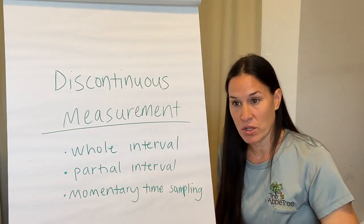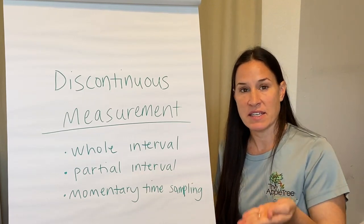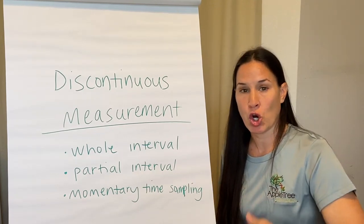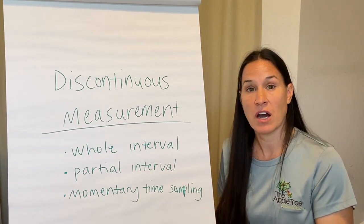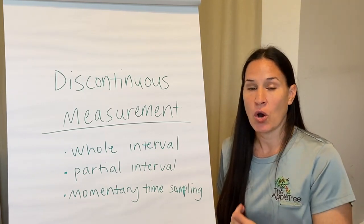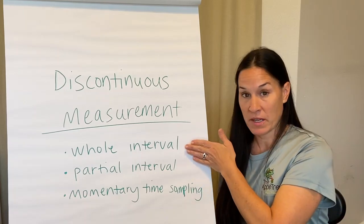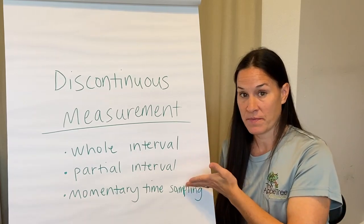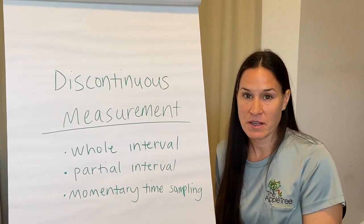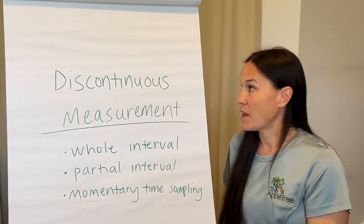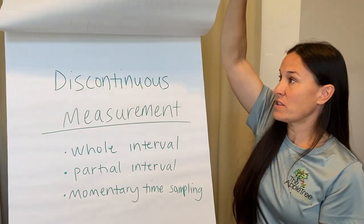Momentary interval is when you are told to look up the moment the timer ends and record whether the behavior you're tracking either occurred or did not occur at that exact moment. So it's the occurrence or non-occurrence of a behavior according to the requirements for each interval type. That's the difference between continuous and discontinuous measurement — it comes down to all instances or some instances.